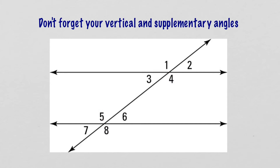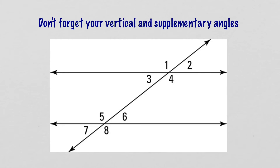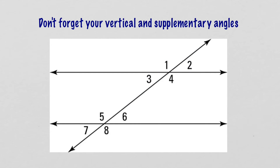We also have supplementary angles. Supplementary angles are angles that together equal 180 degrees — straight lines are always 180 degrees. So angle one and angle two together are 180 degrees. Looking at the transversal as a straight line, angles one and three are supplementary, and angles two and four are supplementary. Any two angles that combine to make a straight line are supplementary. So we've got corresponding, vertical, and supplementary angles.